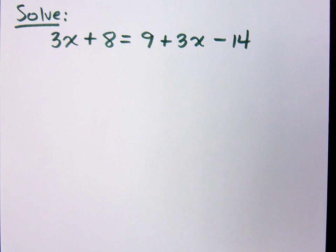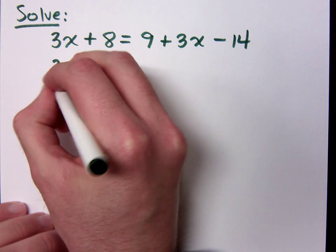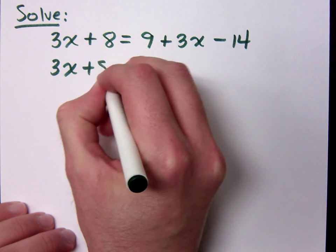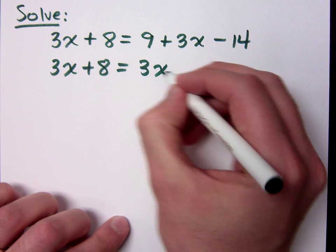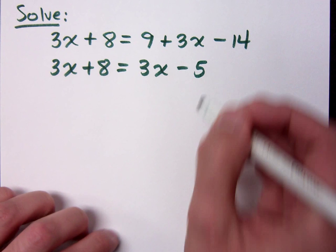First you add them like a term. Combine like terms, right? Yeah, that's... So on the right side I have what? 3x minus 5. 3x minus 5.